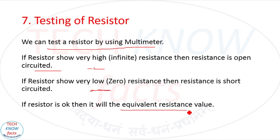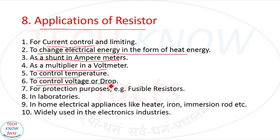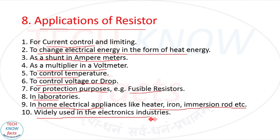Applications of resistor: number one is for current control and limiting; number two is to change electrical energy into heat energy; number three is as a shunt in ammeters; number four is as a multiplier in voltmeters; number five is to control temperature; number six is to control voltage drop; number seven is for protection purposes, such as fusible resistors; number eight is in laboratories; number nine is in home electrical appliances like heaters, irons, and immersion rods; number ten is widely used in the electronics industry. The resistor is a widely used component in electrical and electronics industries.